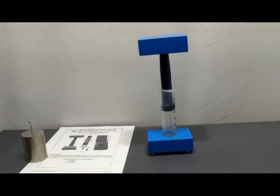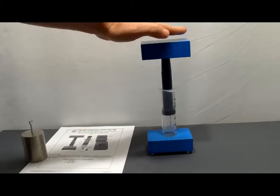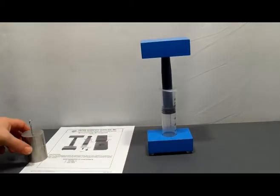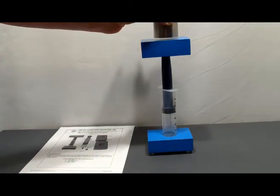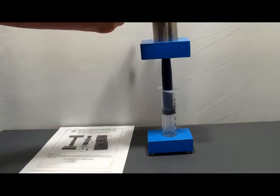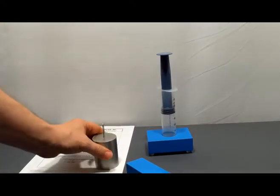Once the apparatus is set up, you can use any mass you want to compress the syringe. The key thing is, no matter what mass you use, always make sure it is centered on the very top so that it's not going to fall off and cause an accident.